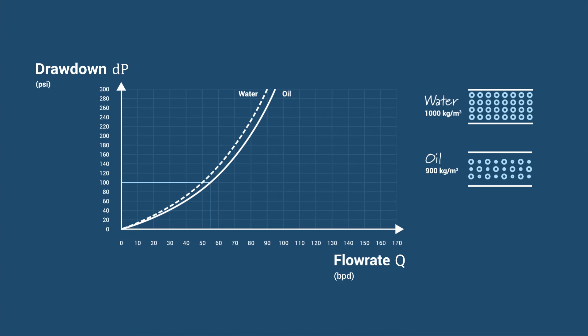At the same 100 psi, you can see how you would go from producing 55 barrels of oil per day to 50 barrels of water per day.